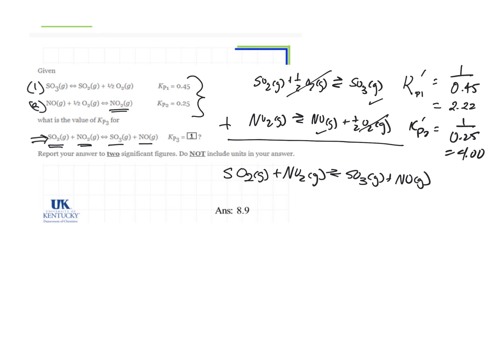So now we have to bring those Ks together to give the K for this new reaction. The K, when you add reactions, you do not add Ks. You always multiply them.